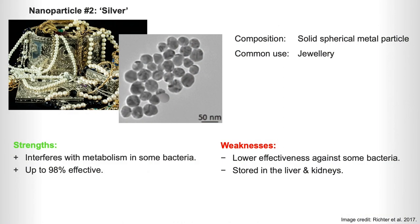Silver nanoparticles don't tear through bacteria — they actually go inside the bacterial cell and prevent it from reproducing; they interfere with the metabolism. This is up to 98% effective. The only downside is it has lower effectiveness against some thinner-walled bacteria, and it's also stored in the liver and kidneys, which is never good for long-term exposure.